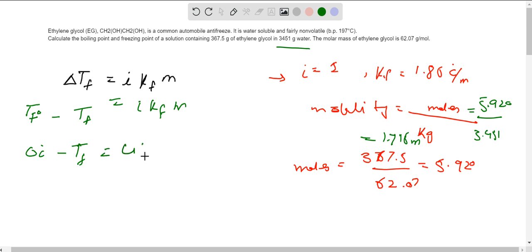Here i is 1, Kf is 1.86, m is 1.716, so the answer we get is equal to minus 3.189 degrees Celsius. This is the freezing point of solution.